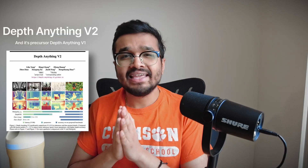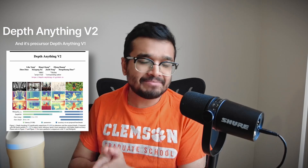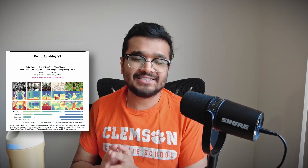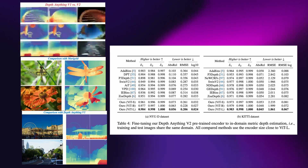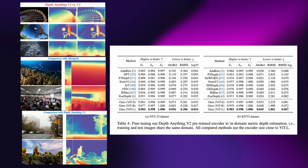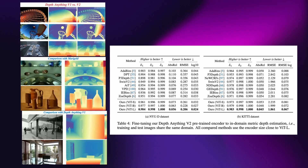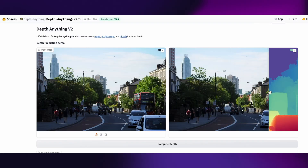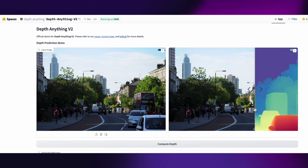In this video, we will discuss a new model called Depth Anything V2 and its precursor Depth Anything V1. Depth Anything V2 has outperformed nearly all other models in the depth estimation task, showing impressive results on some really tricky images. Welcome to Neural Breakdown — let's go deep with depth estimation.